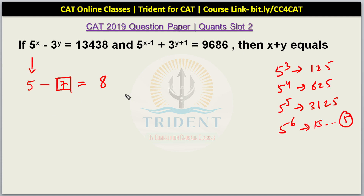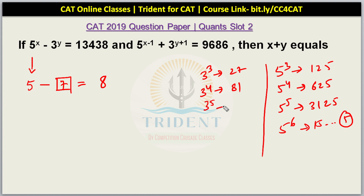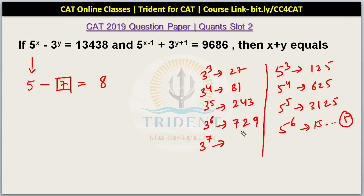The next part is calculating 3 raised to the power y. For 3 cubed we have 27. 3 raised to the power 4 is 81. 3 raised to the power 5 is 243. 3 raised to the power 6 is 729. 3 raised to the power 7 — I don't know the exact number, but it's going to be 2100-something ending in a 7. If you are observant, you would realize that 15,000 minus 2,100 would fetch us this number 13,438.